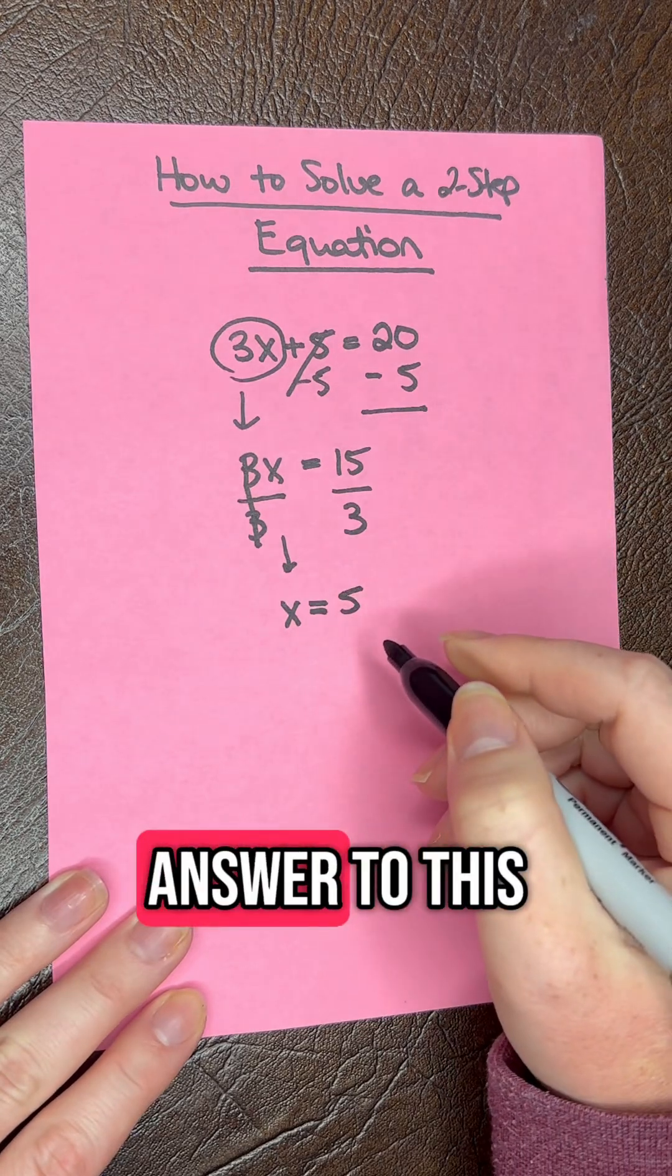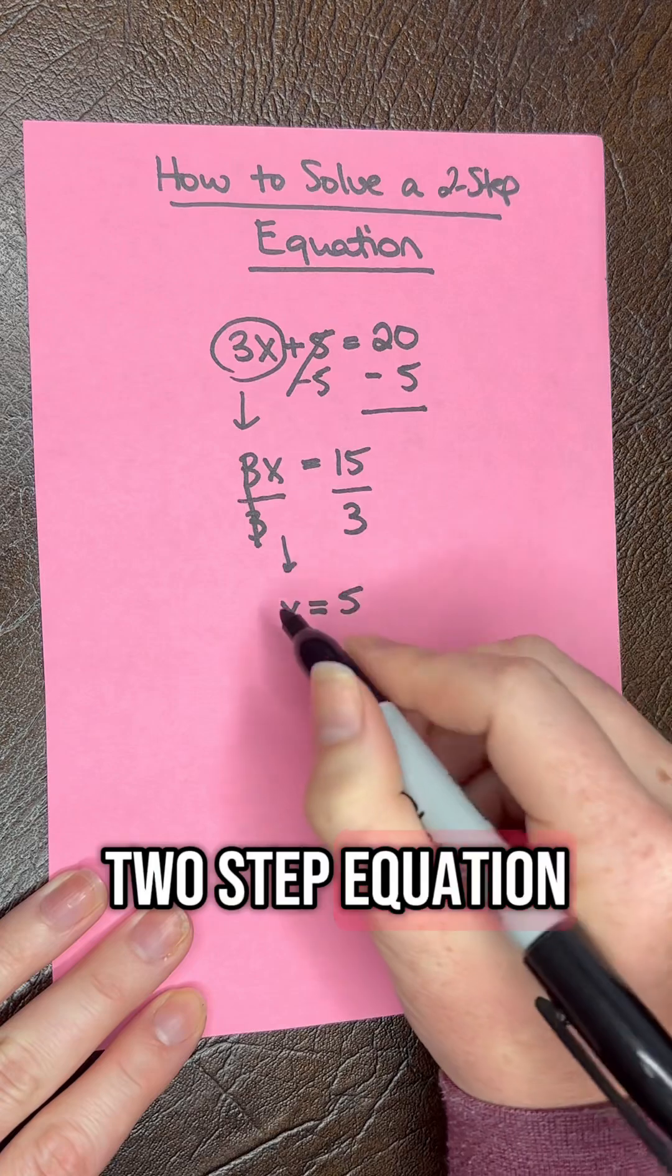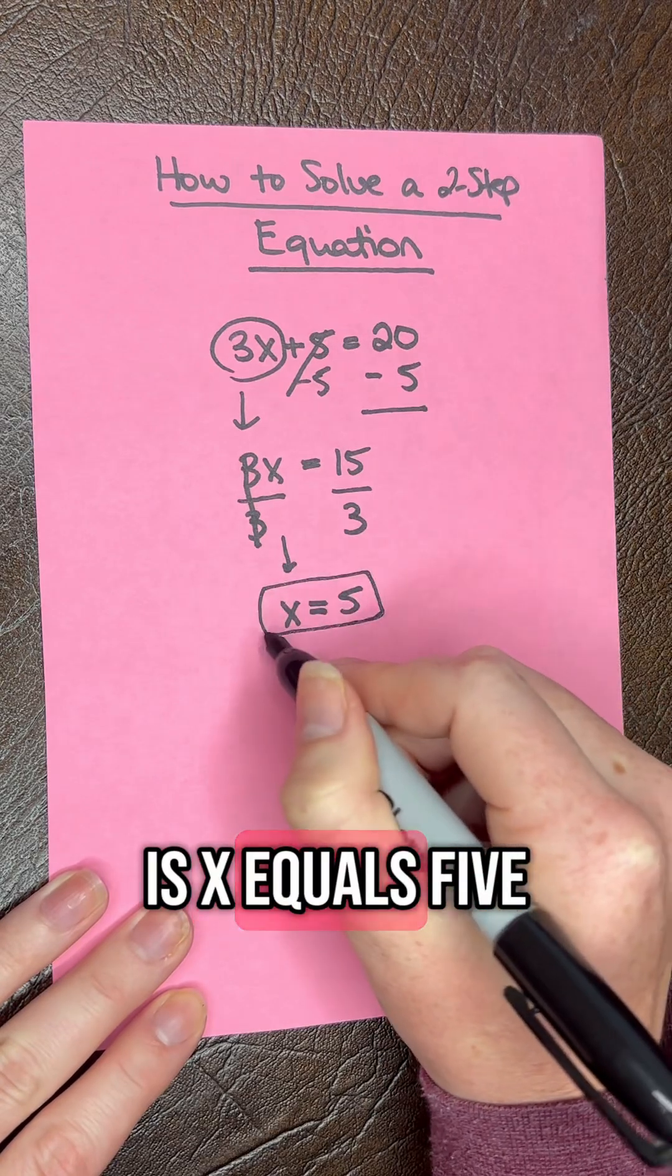Our final answer to this two-step equation is x equals 5.